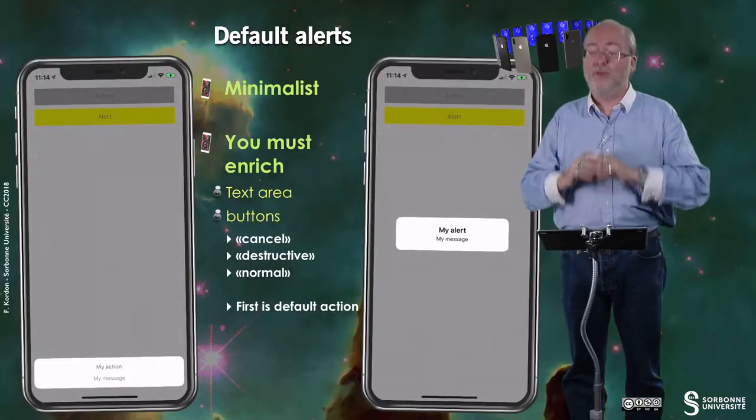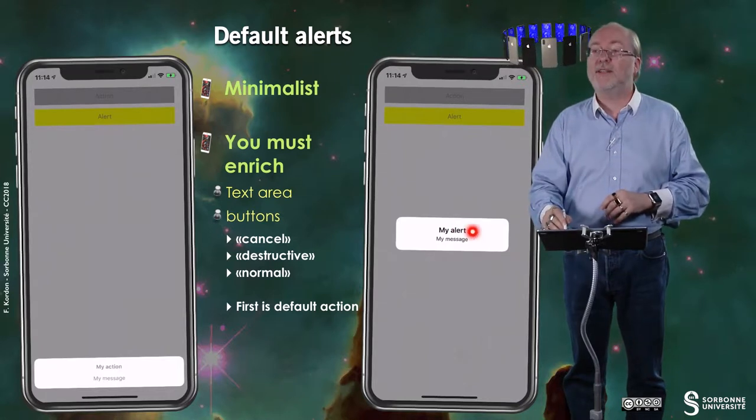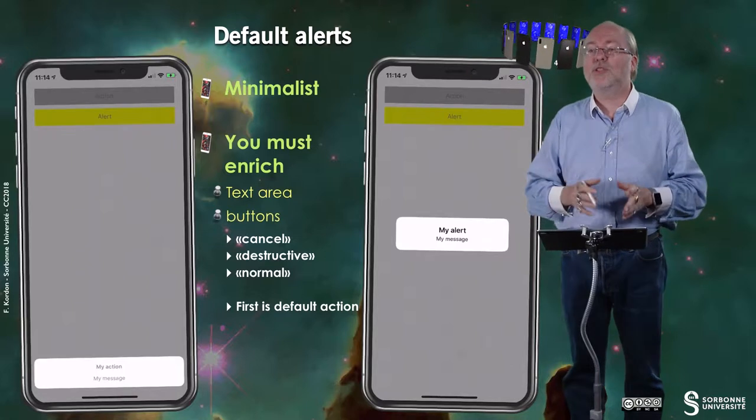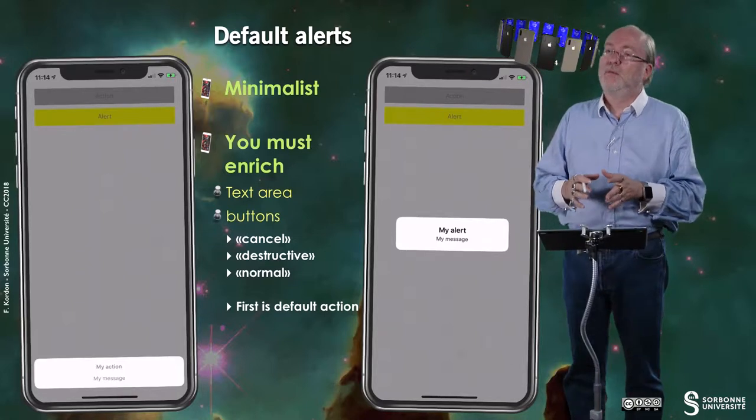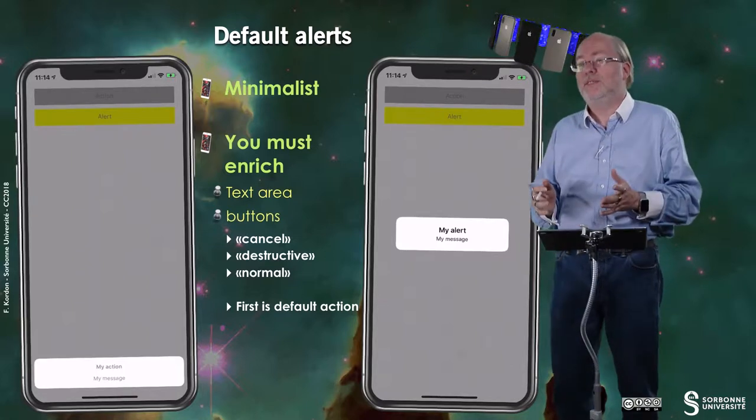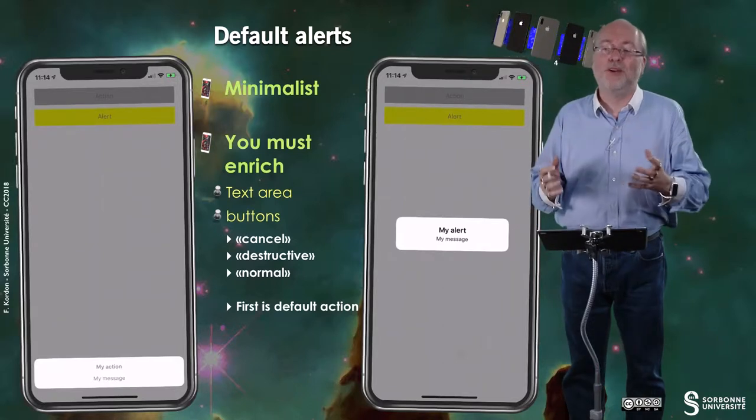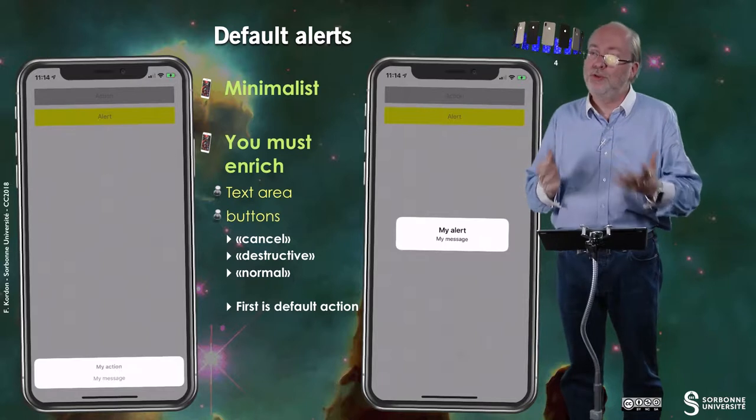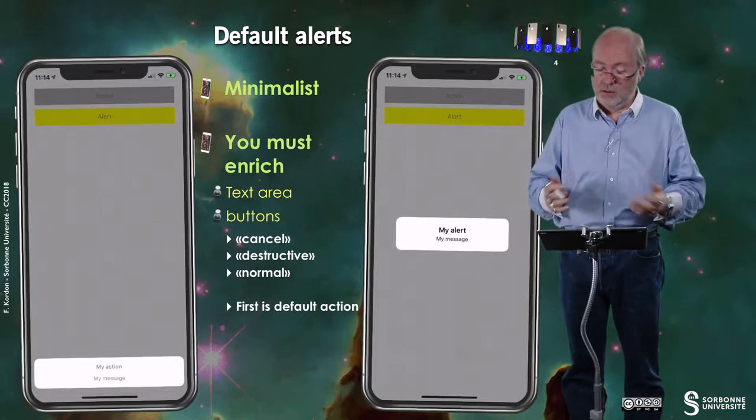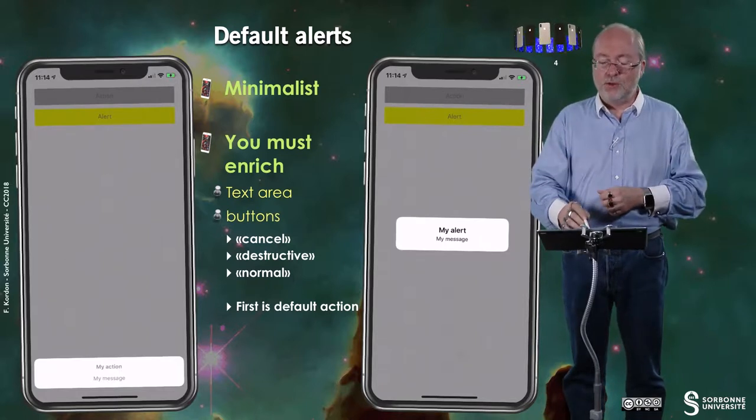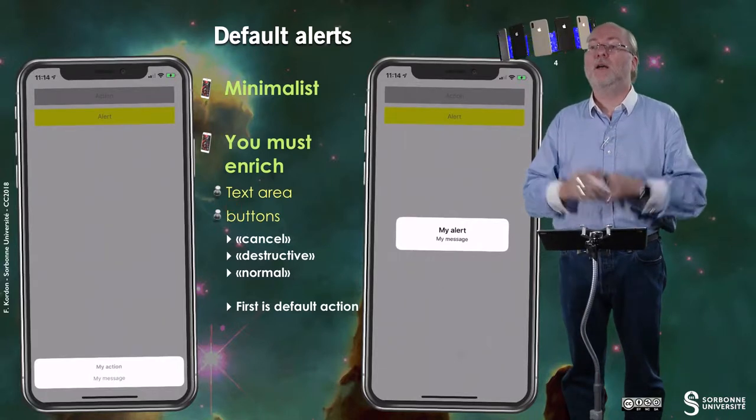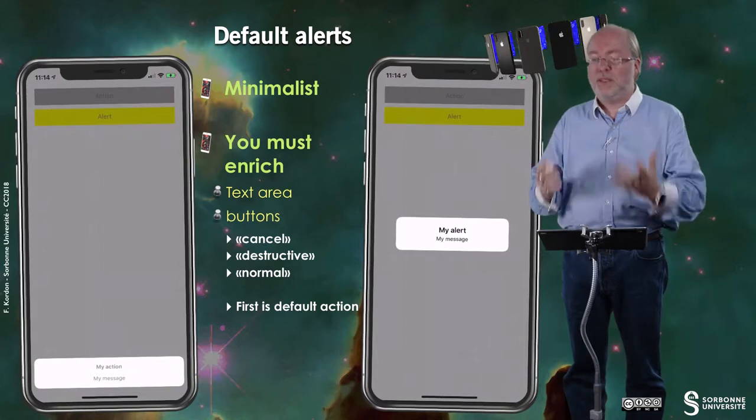Default alerts are really minimalist. You have nothing - just the title and the message. And of course, here you are in big trouble because you cannot dismiss this view because you have no button. So this is your job to attach at least one button to these objects. You can have textarea tools - you can attach textarea, you can attach specific buttons.